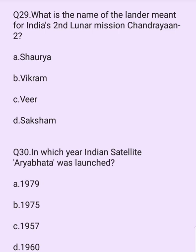What is the name of the lander for India's second lunar mission, Chandrayaan-2? Options are: Surya, Vikram, Veer, Saksham. The answer is option B: Vikram.